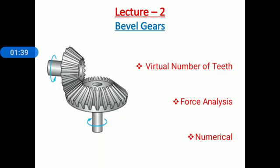The addendum, denoted by letter H suffix A, dedendum denoted by H suffix F, and the pitch circle diameter capital D, are all specified at the large end of tooth.